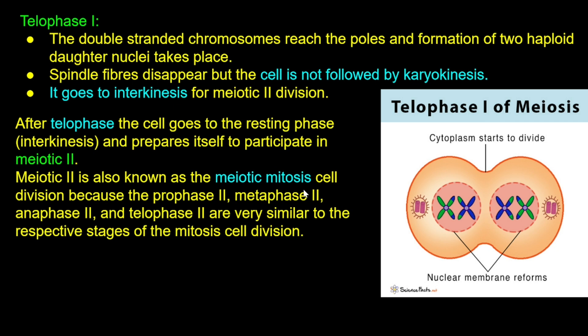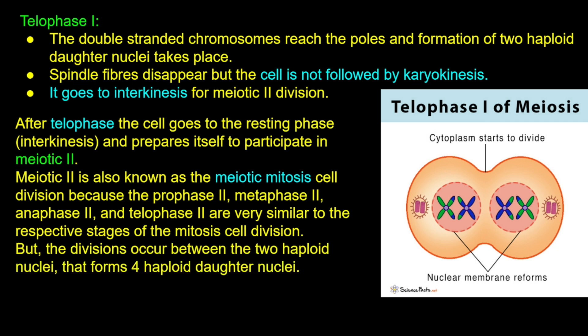The division in meiotic second occurs between the two haploid nuclei that were formed in meiotic first, producing two haploid daughter nuclei each.